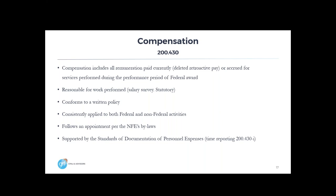Having a written compensation policy is really important not only from a uniform guidance perspective, but also from the IRS Form 990. In Part 6, line items 15A and 15B, it goes over what your compensation is for your executives as well as your other top employees. Having that written policy and how the salaries are documented and determined — whether you're doing a salary survey — is imperative not only for the cost principles under uniform guidance, but in other compliance aspects within the not-for-profit world.